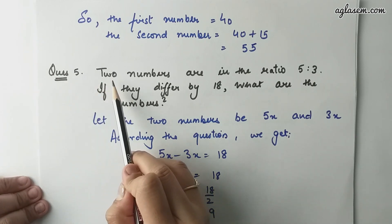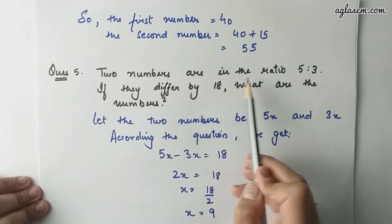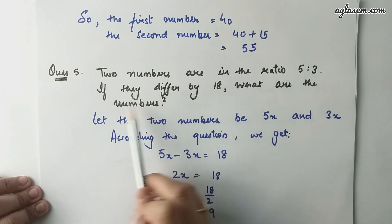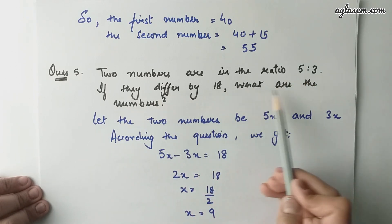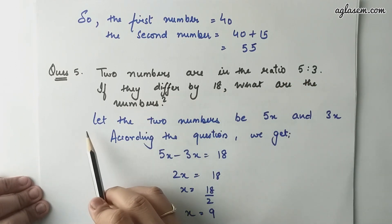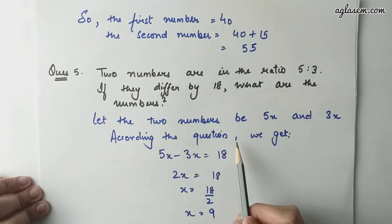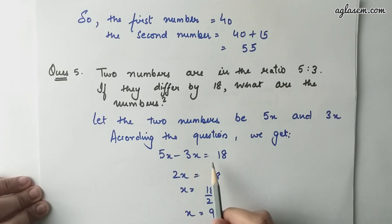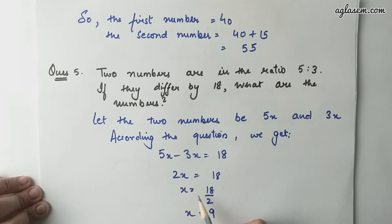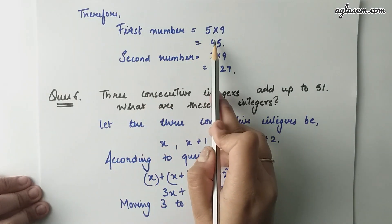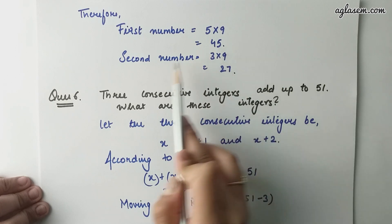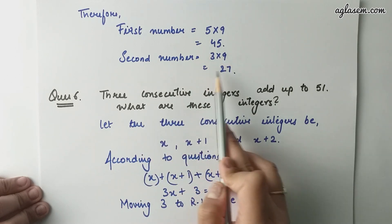Question number 5: Two numbers are in the ratio 5 is to 3. If they differ by 18, what are the numbers? Let the two numbers be 5x and 3x. According to the question, 5x minus 3x equals to 18, so 2x equals to 18 and x equals to 9. Therefore, the first number is 5 into 9 equals to 45 and the second number is 3 into 9 equals to 27.